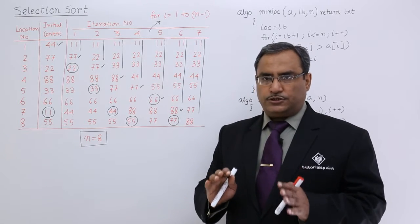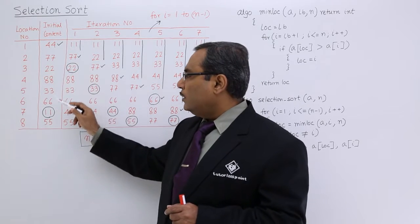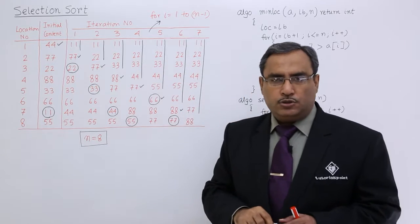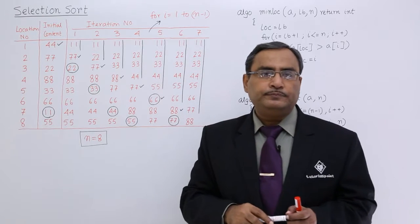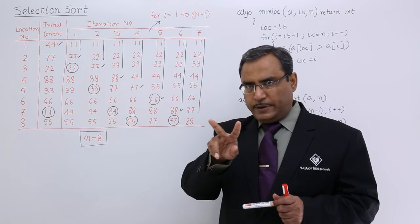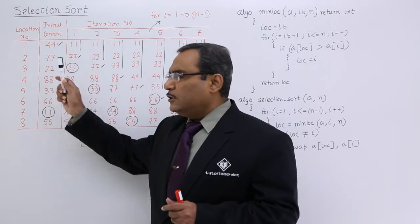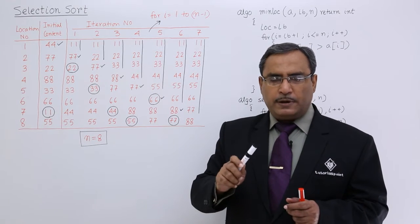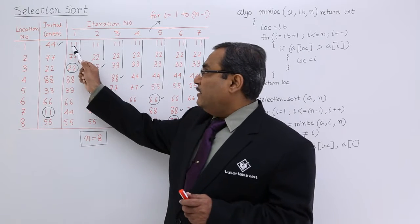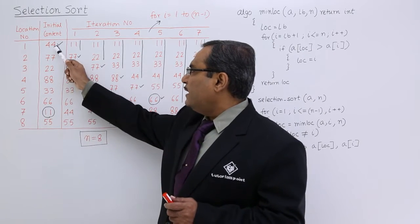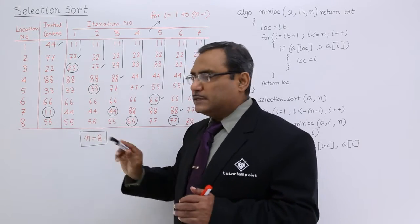Now, the logic for selection sort: first I shall have to find out the location of the minimum data from 1 to n. I am finding this one at location number 7. The range is 1 to n and the minimum number is at location number 7. Is 7 equal to 1? No, because the minimum number is not at the first place. So 11 and 44 will be swapped. The rest of the numbers will have the same place.